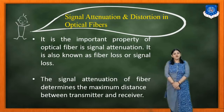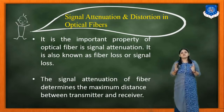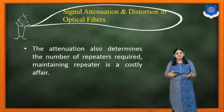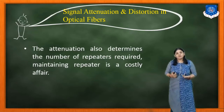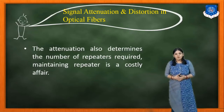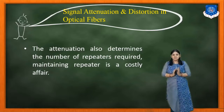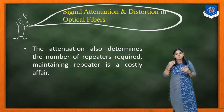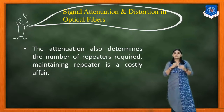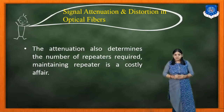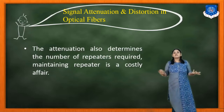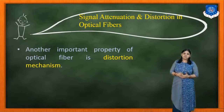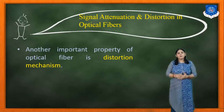The signal attenuation of the fiber determines the maximum distance between the transmitter and the receiver. Attenuation also determines the number of repeaters required. Maintaining the repeater is a costly affair, so you want to go for distortion-less transmission. For distortion-less transmission, we need to repeat the signal — we have to put in repeaters. If attenuation is very large, there will be a large number of repeaters in our system. So the study of signal attenuation and distortion is important.